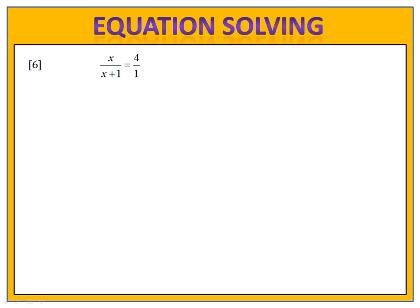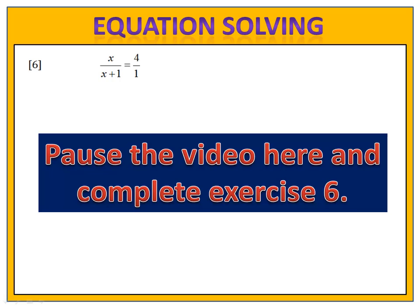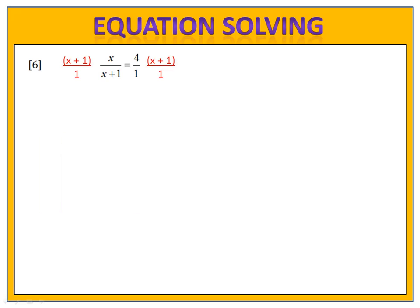In exercise 6, we're going to do something very similar. Here, notice we have a variable in the denominator, x plus 1. Please pause the video here and complete exercise 6. We begin by multiplying both sides of the equation by x plus 1. This causes the x plus 1's to cancel out and now I have no more variables left in the denominator. I have x equals 4 times x plus 1, which means x equals negative 4 thirds. Remember to check your answer — plugging it into the original equation, it doesn't cause danger in the denominator, so x equals negative 4 thirds is our valid solution.